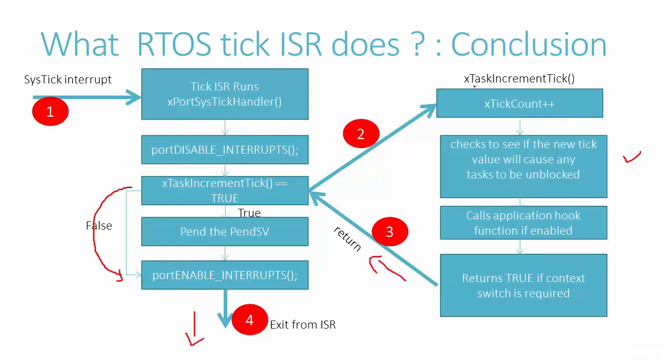I recommend going through the source code of the xTaskIncrementTick function to understand what it really does. That covers the RTOS tick interrupt, the RTOS tick rate, and the RTOS tick ISR.